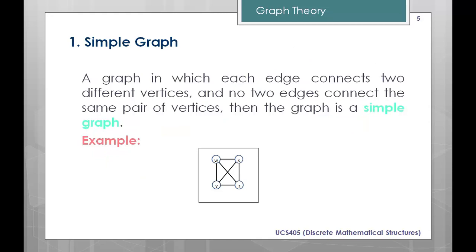Now, different types of graphs. Number one: simple graph, in which each edge connects two different vertices and no two edges connect the same pair of vertices. In this example we have four vertices W, X, Y, and Z. Between W and X there is only one edge — no multiple edges — so that's why we call this a simple graph.